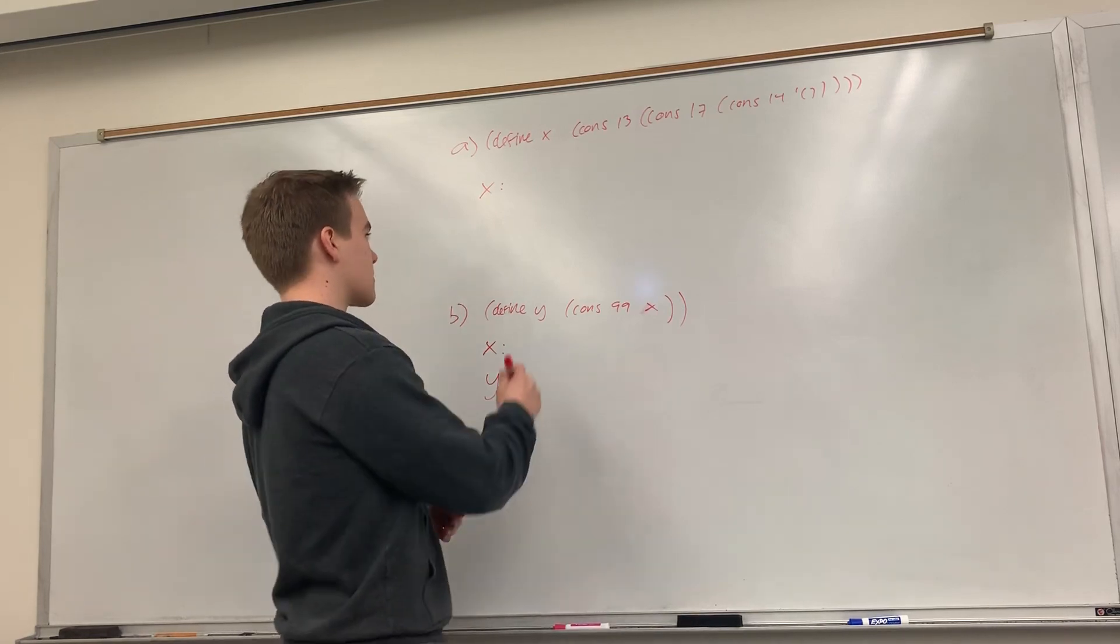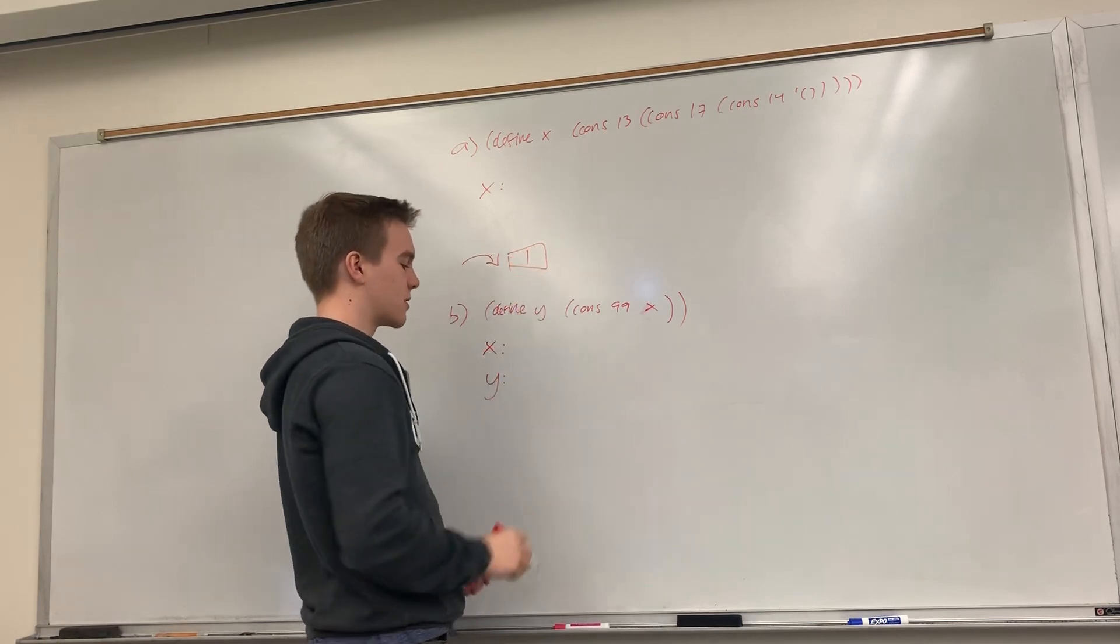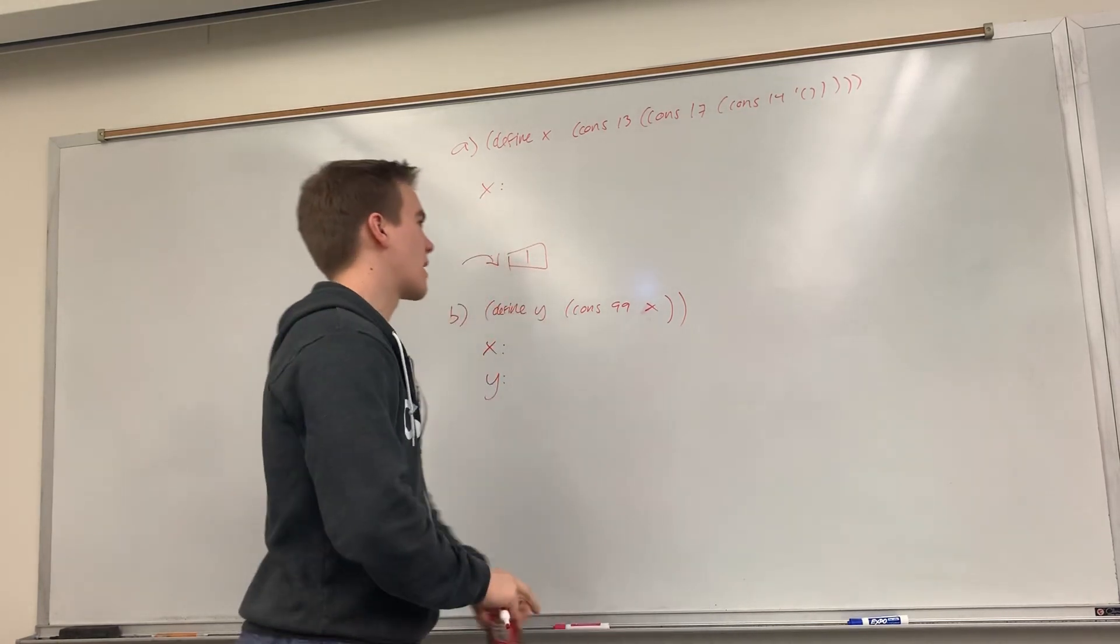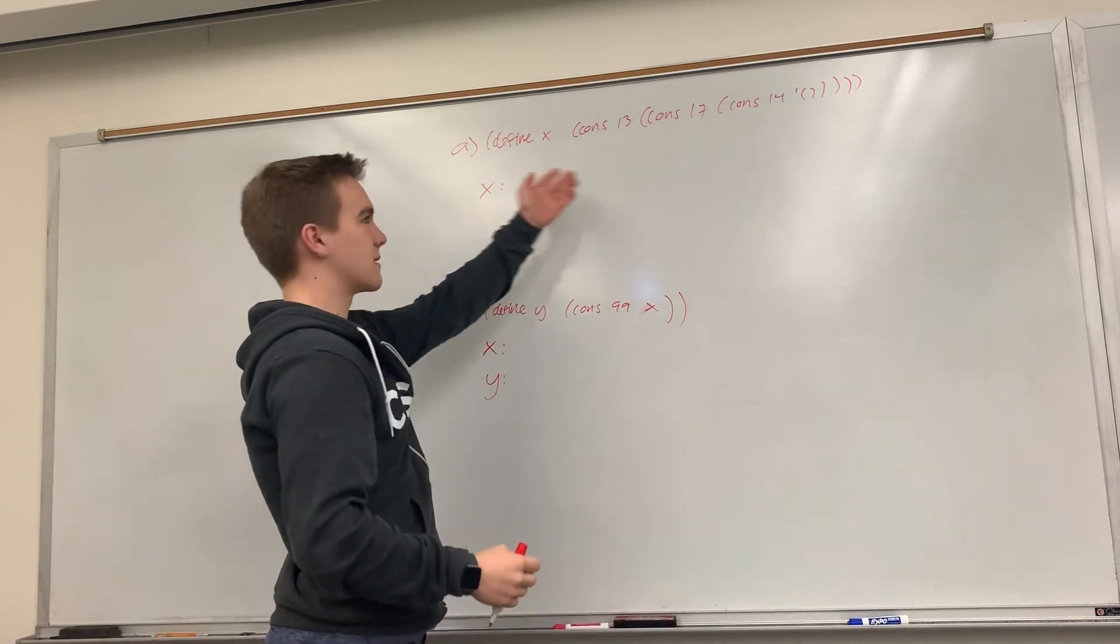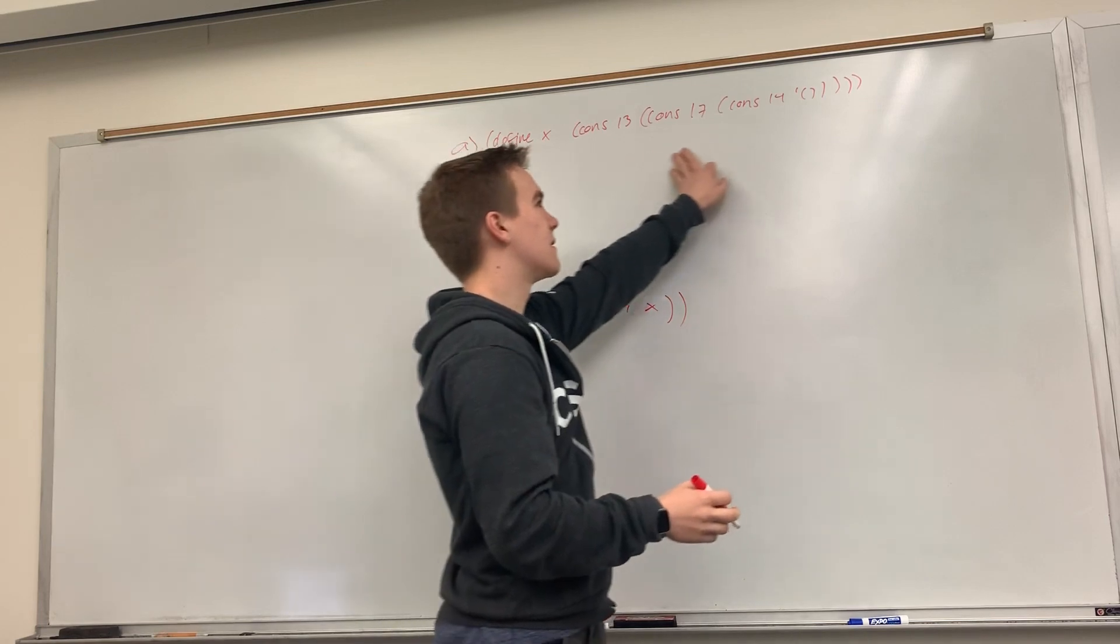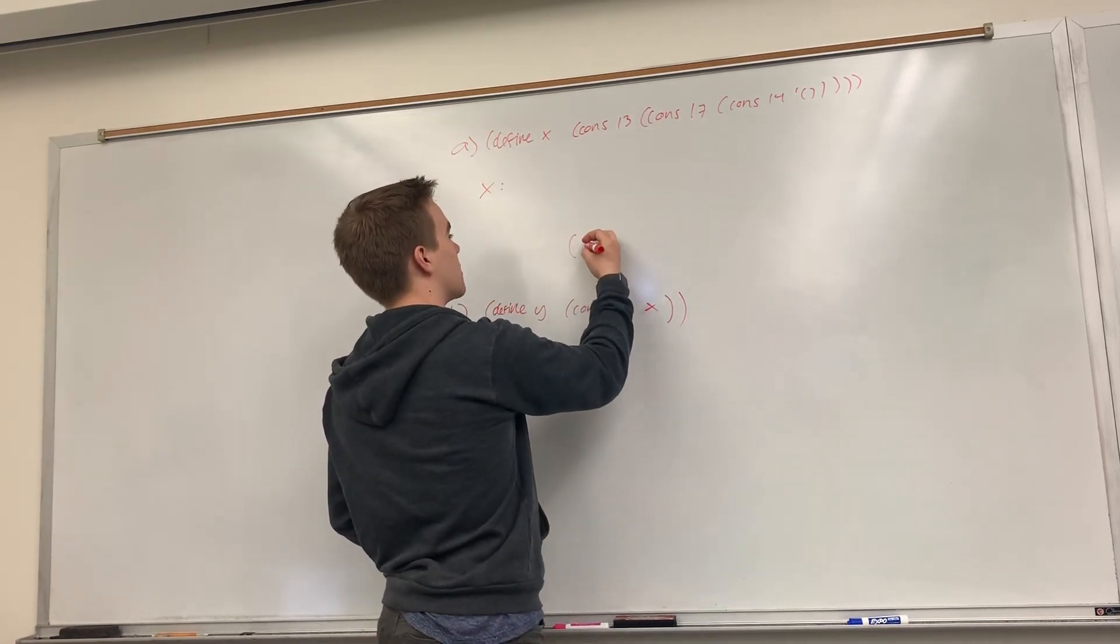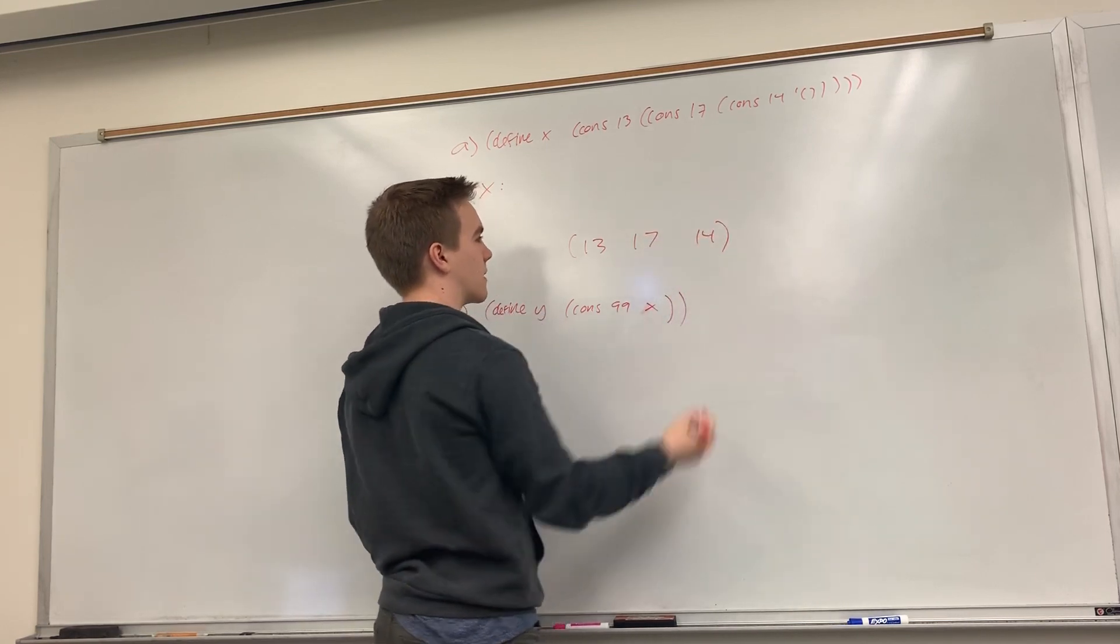Part A asks us to basically use our box and pointer type representation of lists in memory and Racket to represent x in this defined statement. So if we have x defined as this, I mean I think you all should know that the list will end up looking like this.